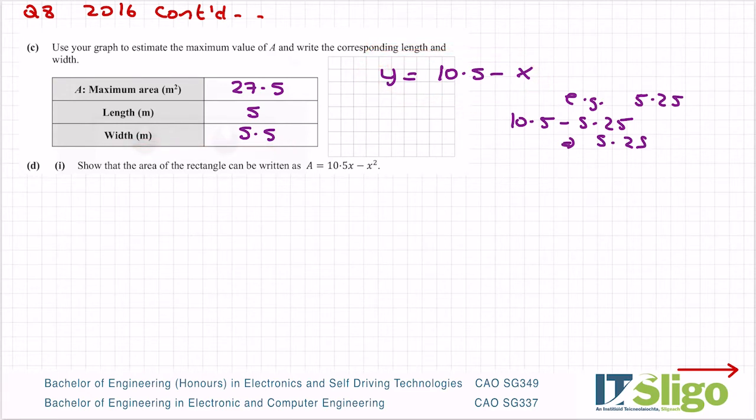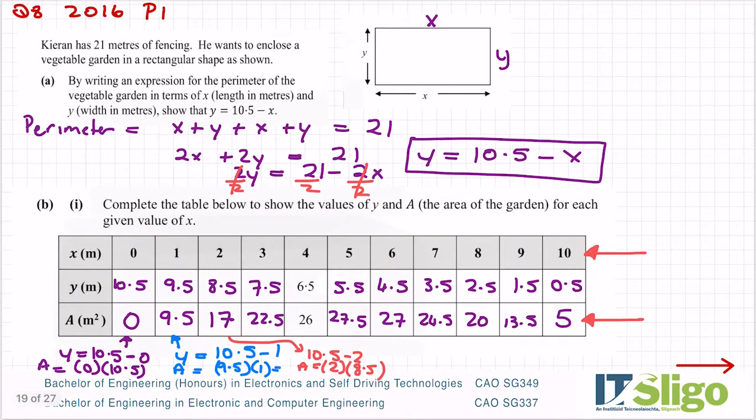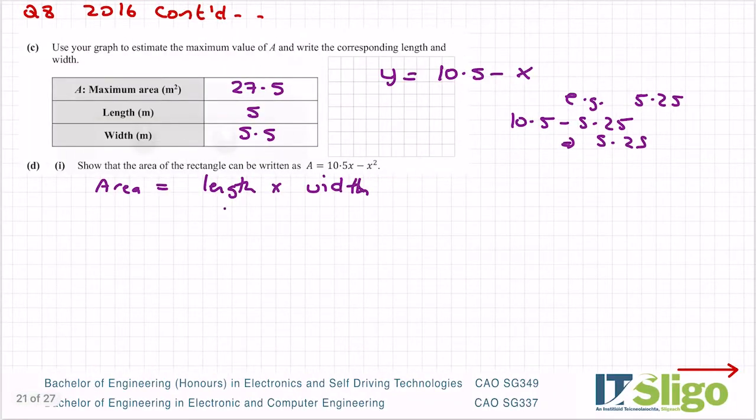Okay, now next part, part d(i), then said: show that the area of the rectangle can be written as a is equal to 10.5x minus x squared. Okay, so area of a rectangle is always length by width. That's what we did when we worked out that table. What length and width have we in our rectangle? We have x and y. Okay, so we have x by y. I'm just not using the multiplied sign here, I'm just using the dot, which is another way of writing multiplied. I have to make it look like this. It's got the x's and the x squareds in it. So I'm going to use this for my y instead, because I can see the 10.5 in it, and that would pull the 10.5 into this question. So instead of y, I'm going to put in 10.5 minus x.